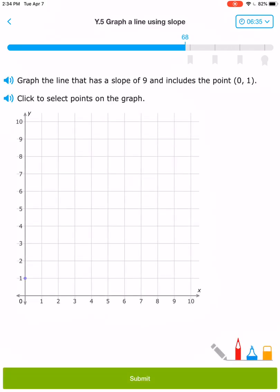(0, 1). And a slope of 9. So that means I need to go 1, 2, 3, 4, 5, 6, 7, 8, 9, 1. So that is my line.